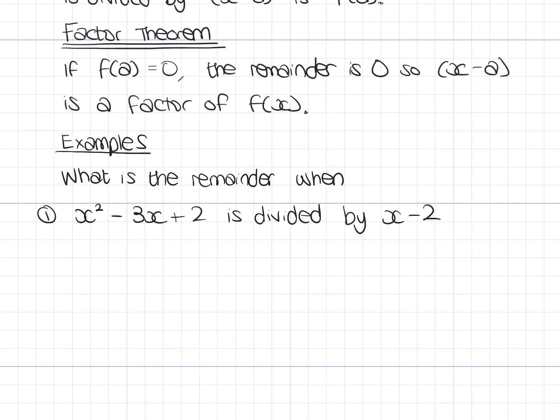So, if we're dividing by x minus 2, then if we remember at the top, if it was x minus a, we put a in, f of a. So, it's x minus 2. So, I'm going to work out f of 2. f of 2 would simply be 2 squared minus 3 times 2 plus 2. So, 4 minus 6 is minus 2 plus 2. Oh, that's 0. So, the remainder here is 0. So, we could say, therefore, x minus 2 is a factor. We don't have to. We were only asked to find the remainder. The remainder is 0.